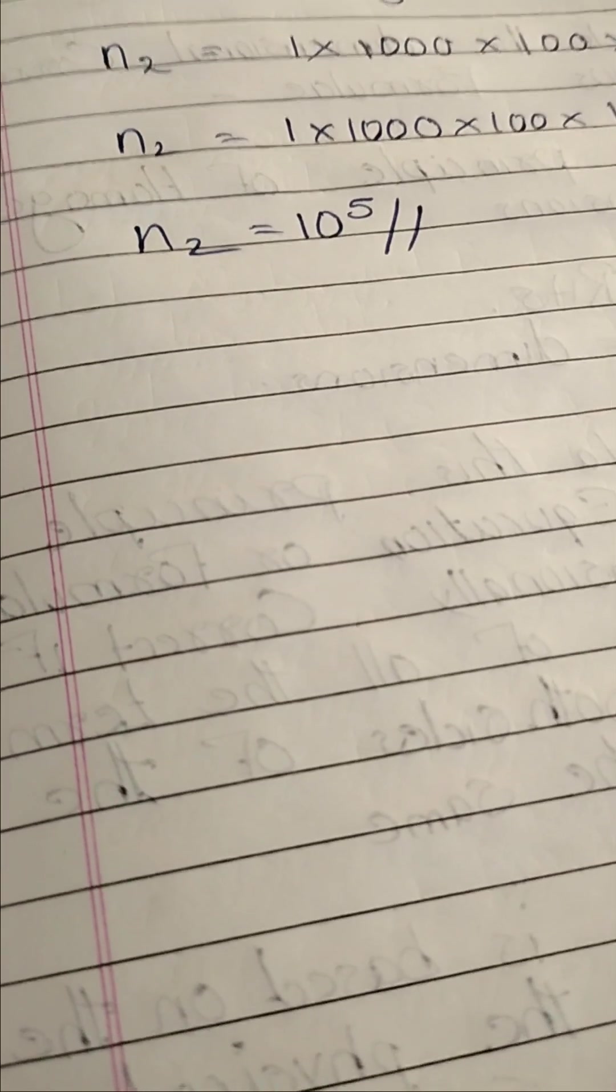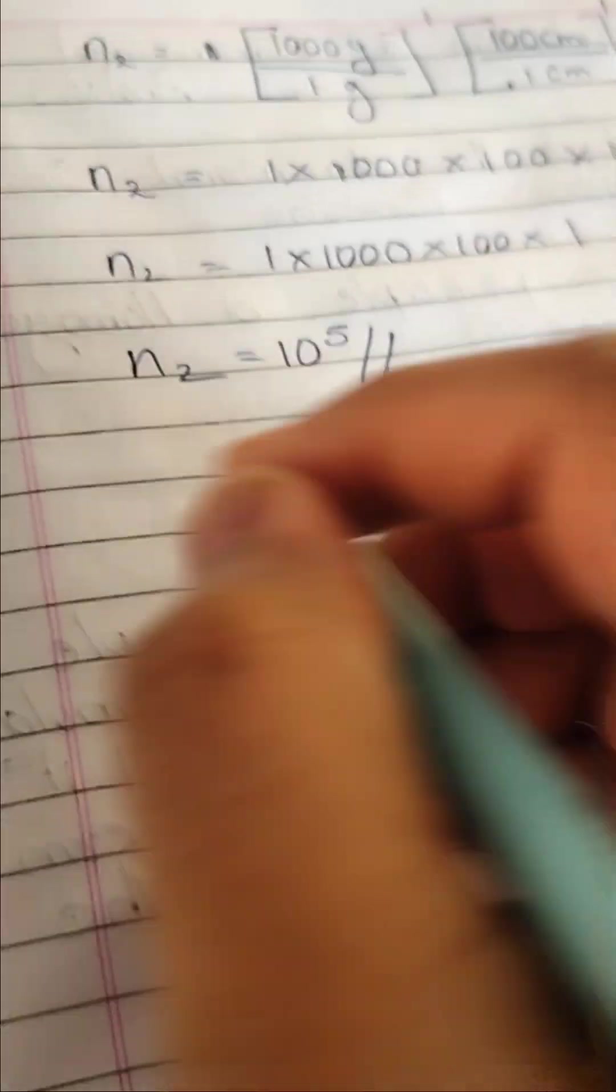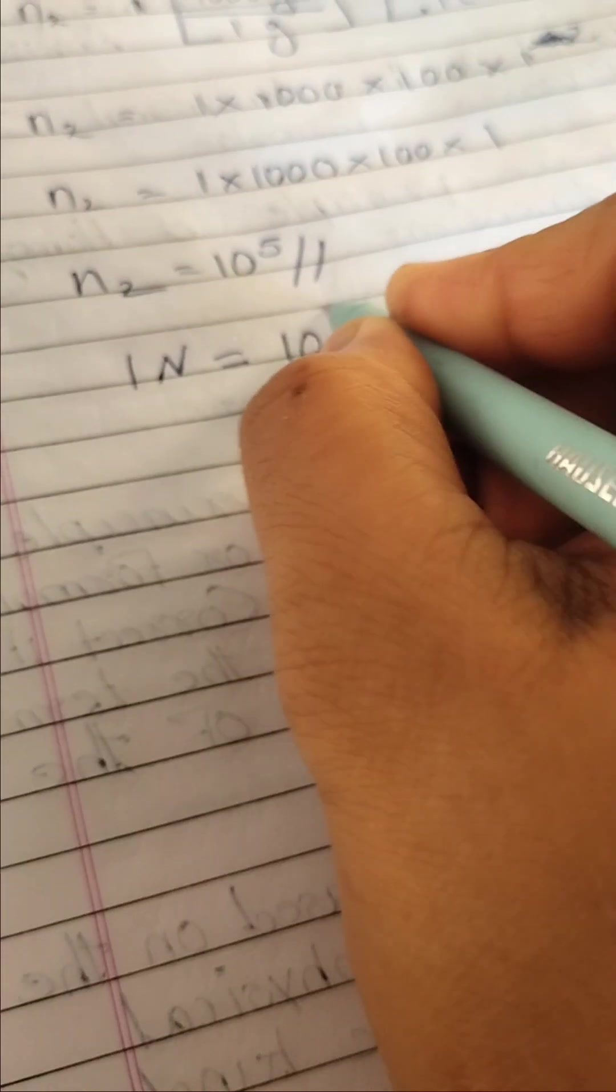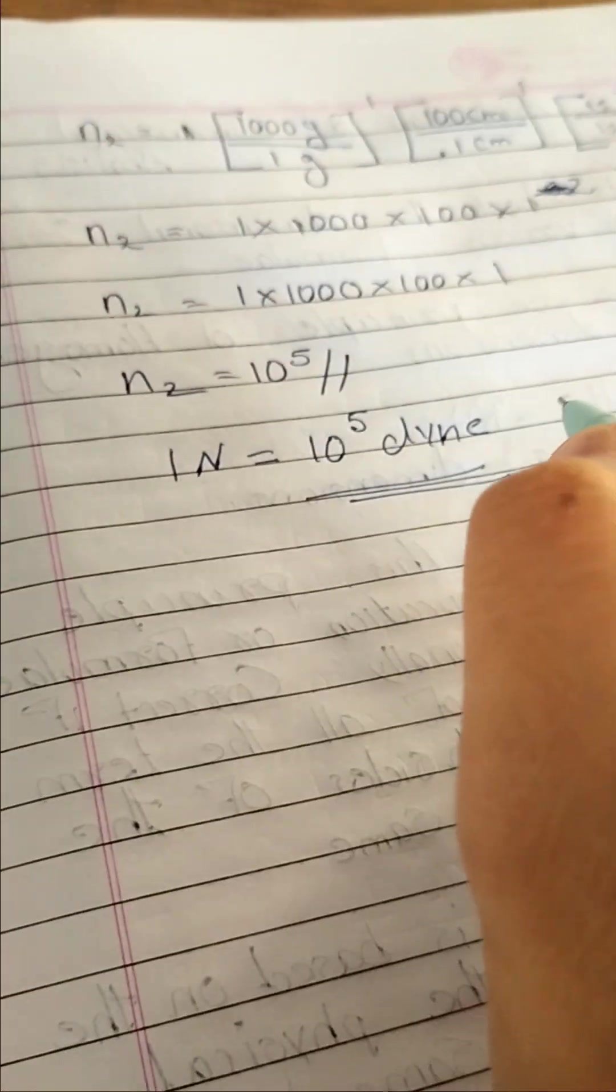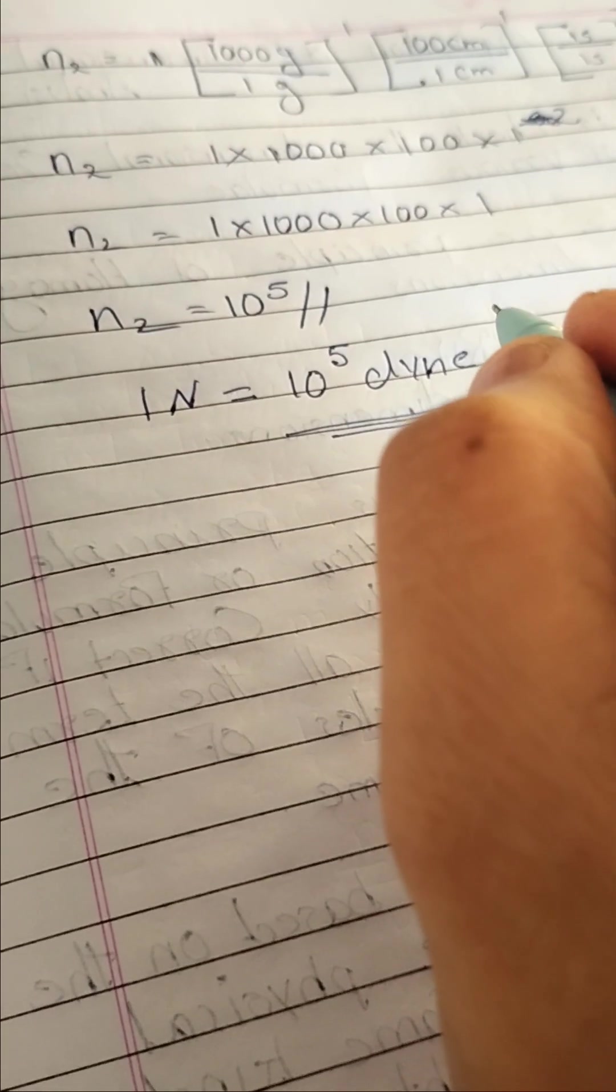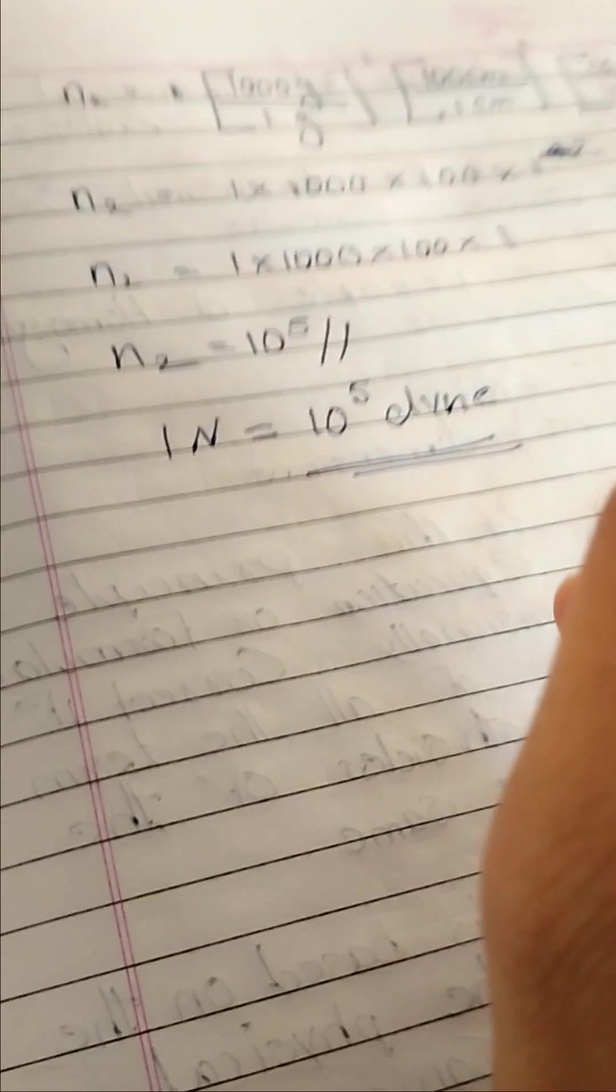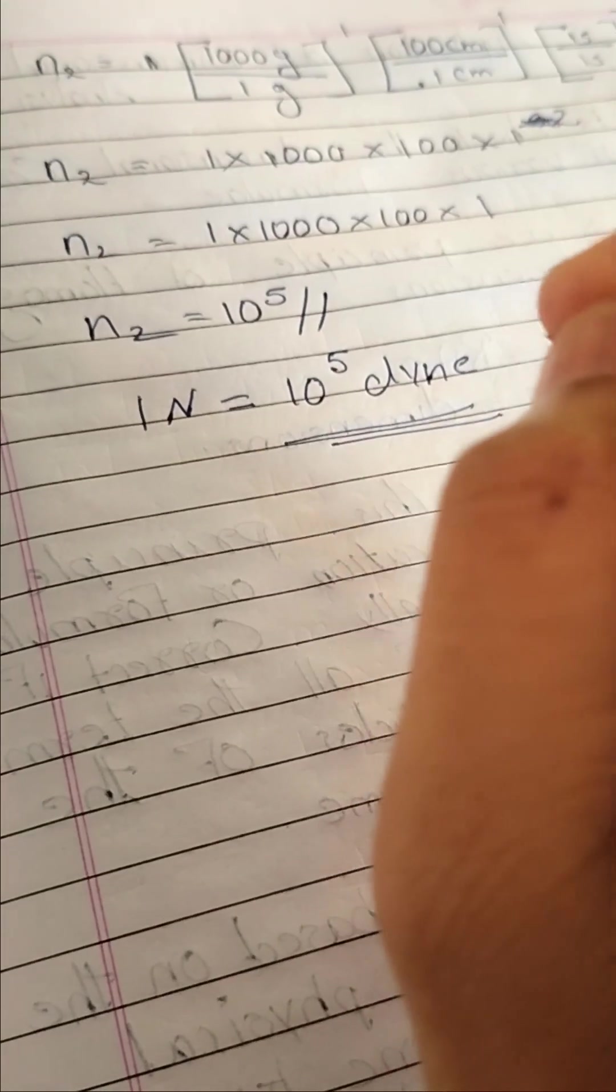So what is your answer? N1 value is 1. N2 value is 10 to the power 5. So 1 Newton equal to how many dynes? 1 Newton equal to 10 to the power 5 dynes. Our answer is proved. I hope you can understand. Please listen once again and try to clarify it. Very very important portion of the second chapter. It should come in your question paper. Thank you so much. All the very best. We love you all. Thank you.